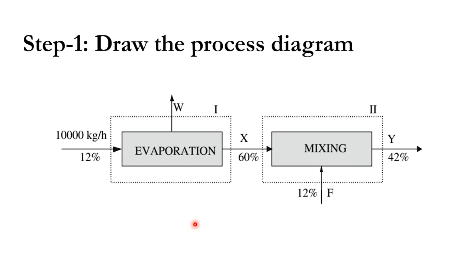Assuming steady state: the feed is 10,000 kg/hr at 12% concentration entering the evaporator. Water W is evaporated, producing stream X at 60% concentration. Stream X is then mixed with fresh juice F at 12% to yield product P at 42%. The system is divided into two envelopes — envelope one covers the evaporator, envelope two covers the mixing step.